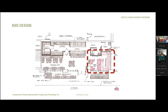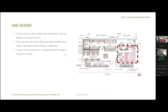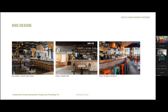The next area on the plan is the bar. A bar can be a great way to attract more customers to stay for dinner and increase revenue. We generally like to place bars close to the front of the restaurant, easily visible from the sidewalk and street, so folks can see your back wall and get a sense of what's going on inside. A rule of thumb for a bar: 8 to 12 seats is a good start, then adjust depending on the size and shape of the space.